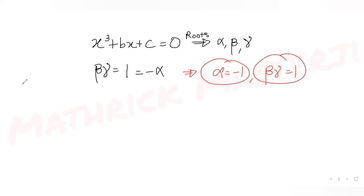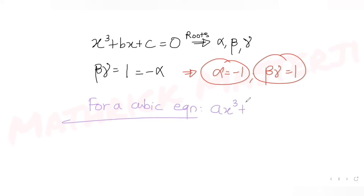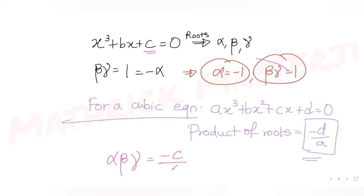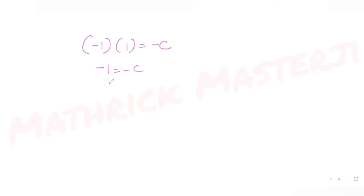For a cubic equation of the form ax cubed plus bx squared plus cx plus d equals zero, the product of the roots is minus d over a. So alpha times beta times gamma equals minus d over a, where d is c and a is one in our equation. That gives alpha times beta times gamma equals minus c. Since alpha is minus one and beta times gamma is one, we get minus one equals minus c, so c equals one.